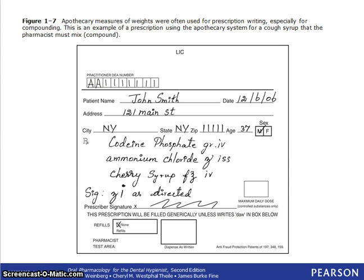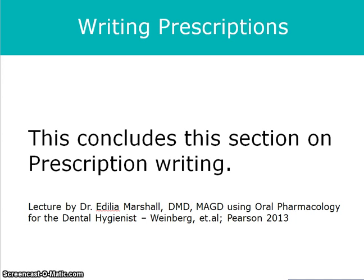This is a prescription for a compounding pharmacy and the units are in the apothecary measure of weights. However, the heading, body, and closing still contain the pertinent information we discussed before. This concludes this section on prescription writing.